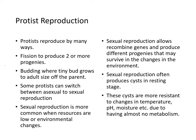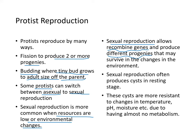Protists reproduce in many different ways: fission produces two or more progenies; budding is where a tiny bud grows off to adult size and pinches off the parent. Some protists can switch between asexual and sexual reproduction. Sexual reproduction is more common when resources are low or environmental changes occur, because it allows recombination of genes producing diverse progenies. Sexual reproduction often produces cysts — a resting stage more resistant to changes in temperature, pH, and moisture.